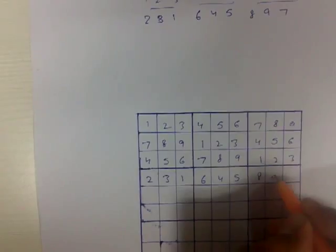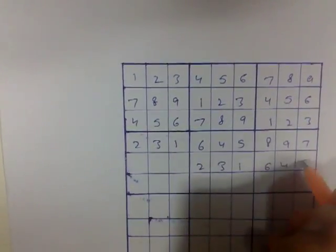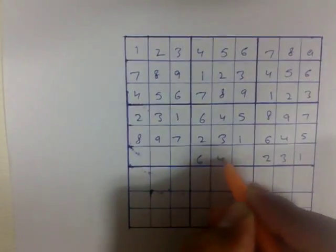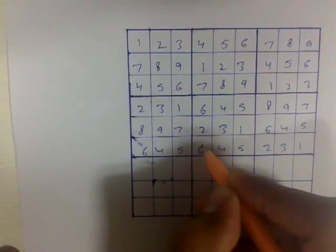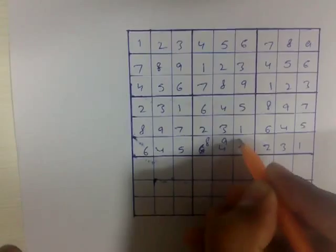Come here. 2, 3, 1, 6, 4, 5, 8, 9, 7. 2, 3, 1, 6, 4, 5, 8, 9, 7. 2, 3, 1, 6, 4, 5, sorry, 6, 4, 5, and 8, 9, 7.